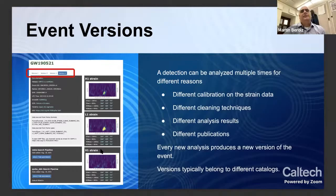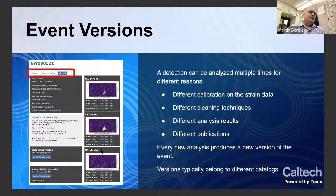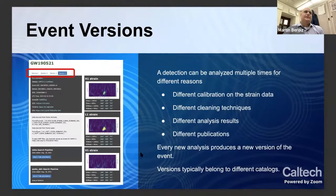Each reanalysis produces a new version of the event. This has the advantage that if you wrote a paper citing a specific event version, you can refer to it directly and it will not change. Typically, each version corresponds to a different catalog or publication.